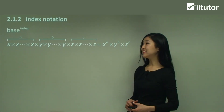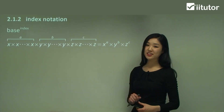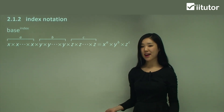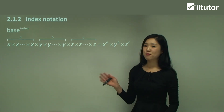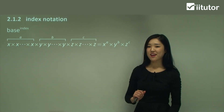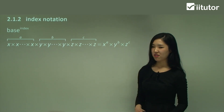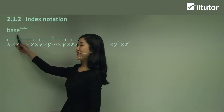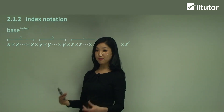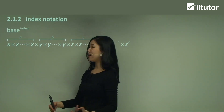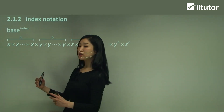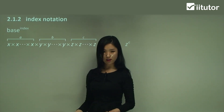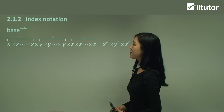Now we're going to look at index notation. You've already got an idea of what indices are, so this part shouldn't be too hard. Something I've already mentioned in the first section: the base is the number on the bottom and the power is the index. This is something you've already learned in the first part.